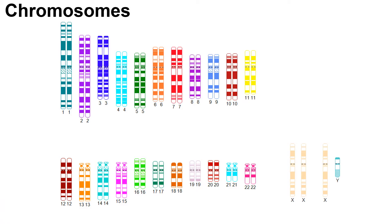Each of us have millions and millions of cells that make up our bodies. Our cells contain structures called chromosomes that are made up of our genetic information or our DNA. Chromosomes keep our genetic information packaged into our cells.